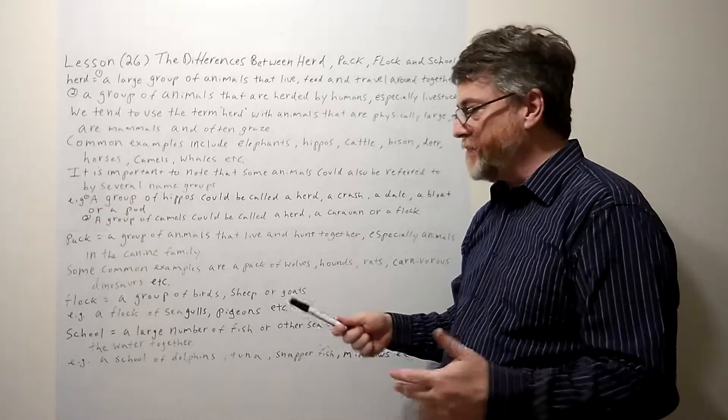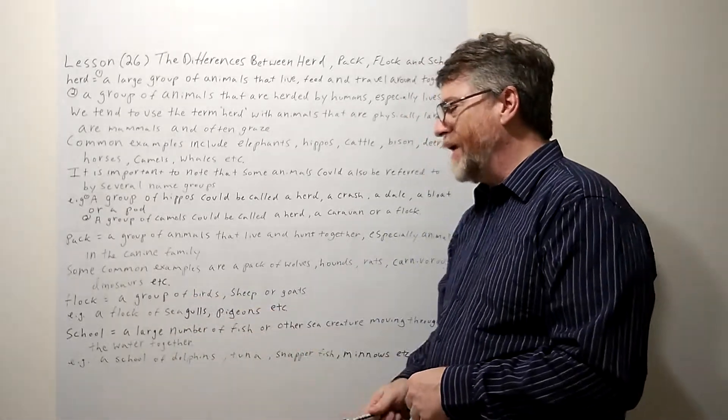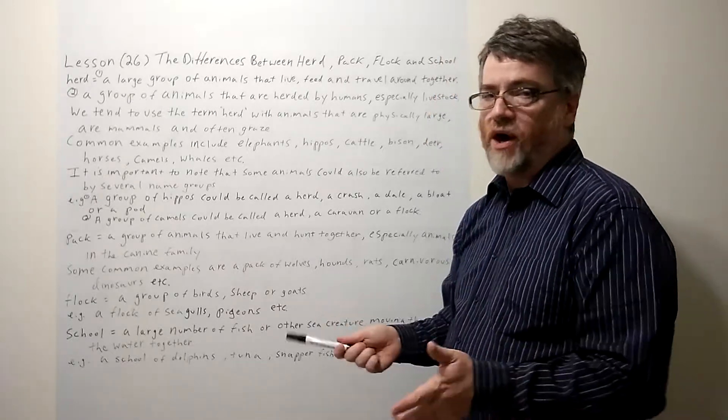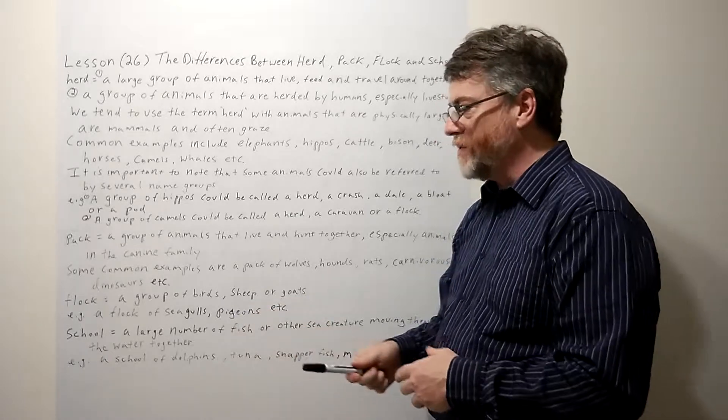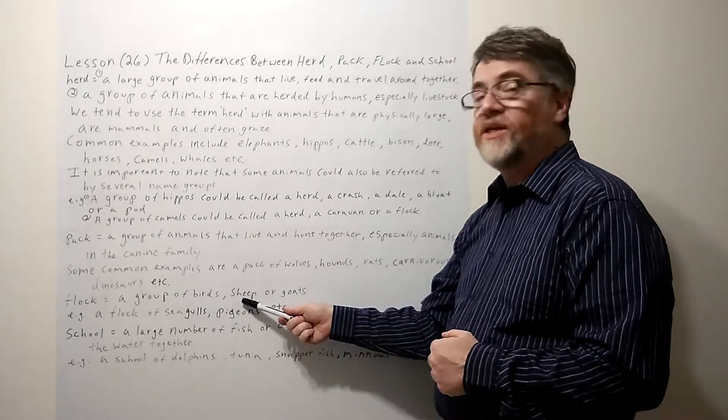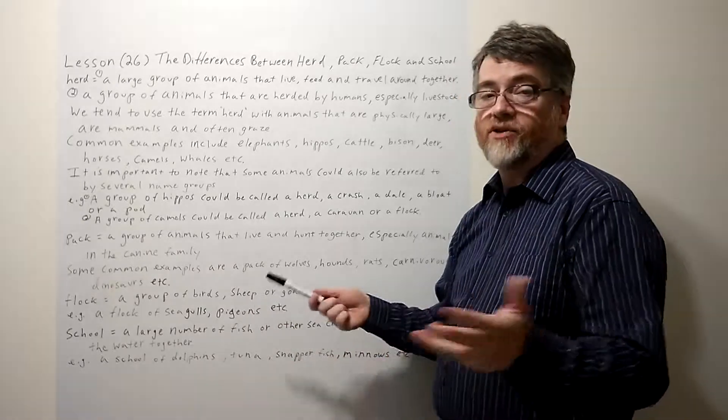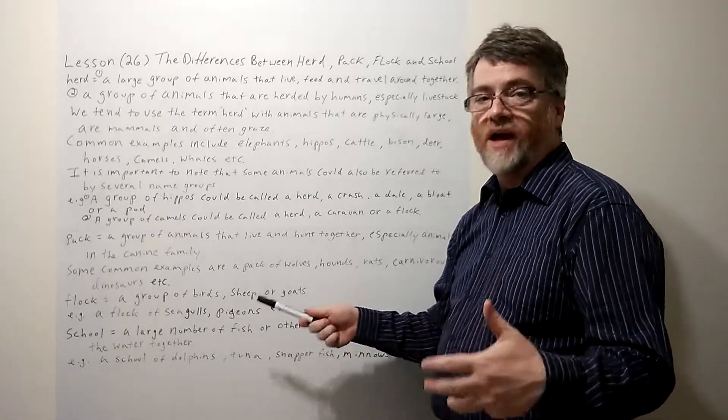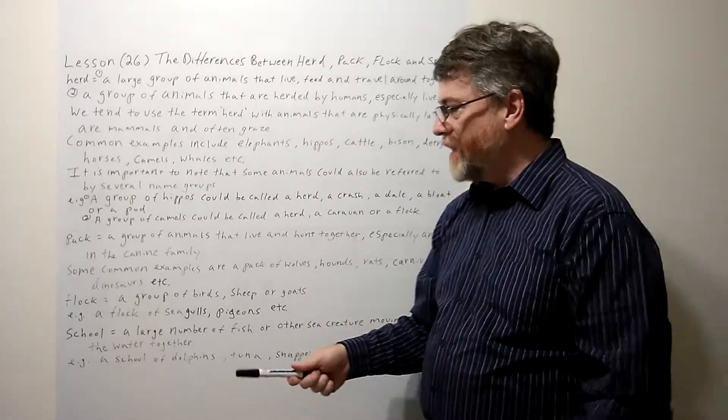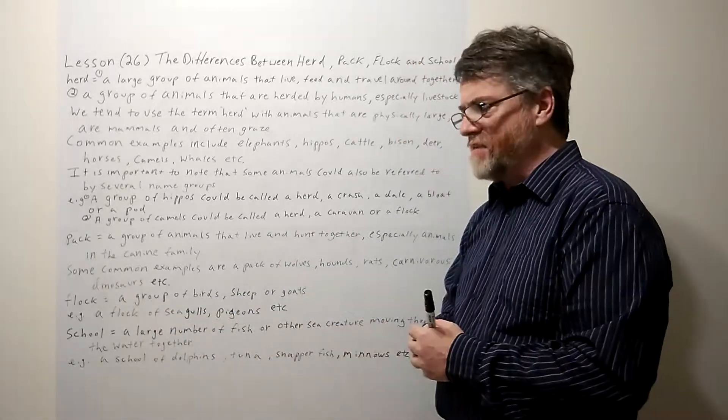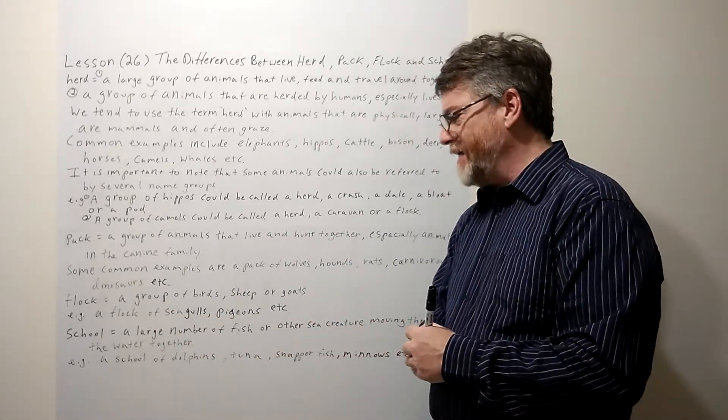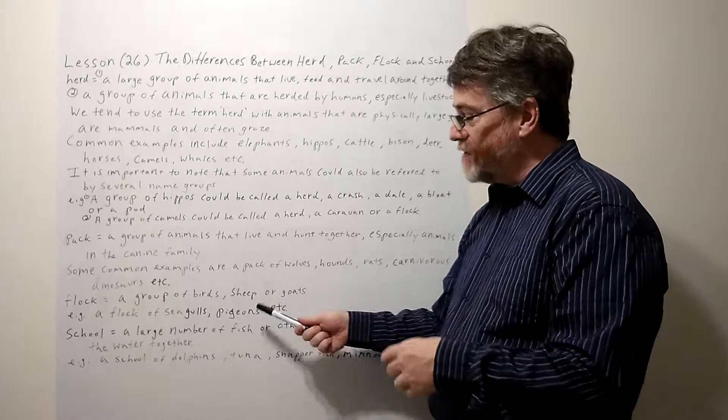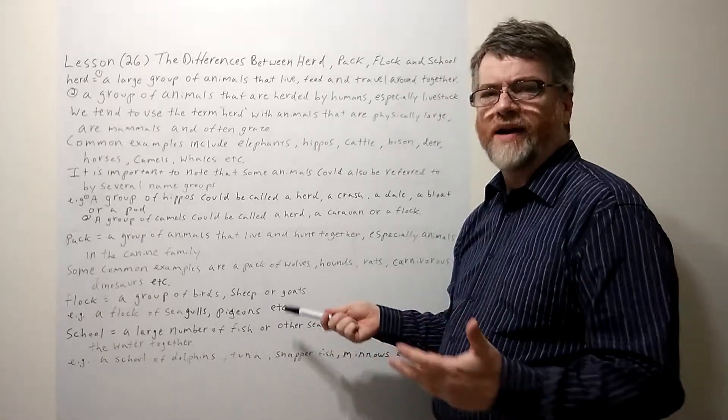Let's take a look at the next one. Flock: a group of birds. Probably most birds, not necessarily 100%, but most birds probably could be referred to as a flock. We also use it with sheep and goats. Sheep was also herd too. These are common ones that we hear with flock. A flock of seagulls—I think there used to be a band in the 1980s called A Flock of Seagulls. A flock of pigeons.